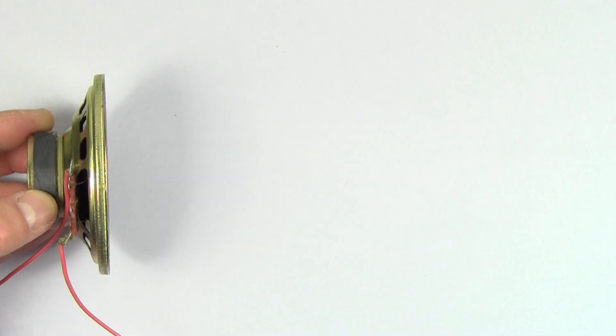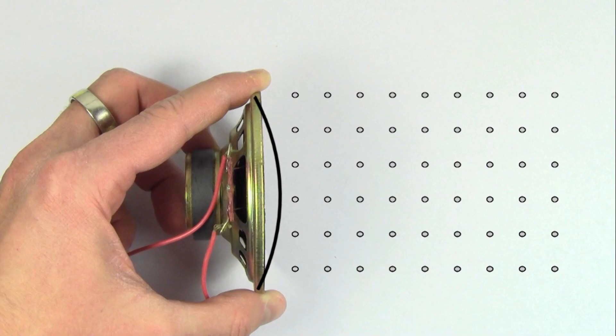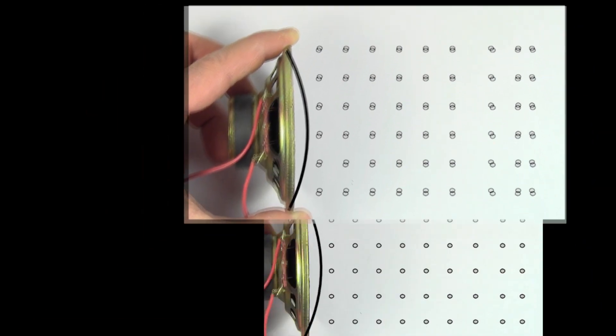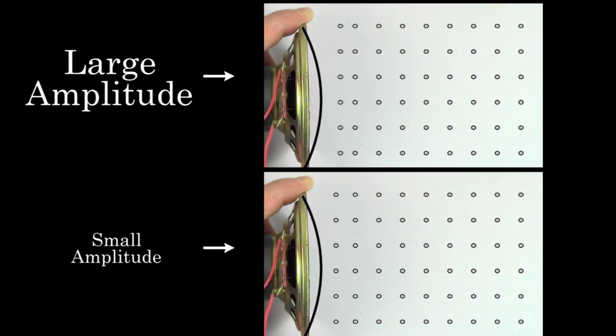People often think that changing the amplitude will change the speed of a sound wave, but it won't. If we create a sound pulse with a large amplitude, it won't travel any faster than a sound pulse with a small amplitude in the same medium. It will just be louder.